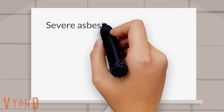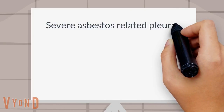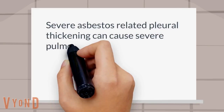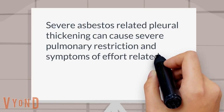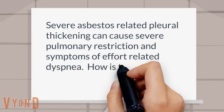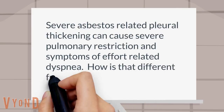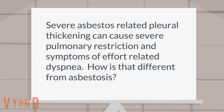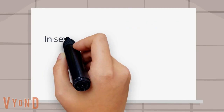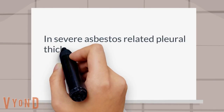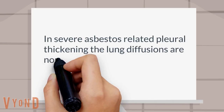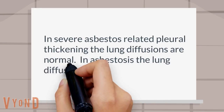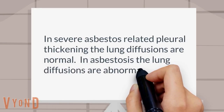Severe asbestos-related pleural thickening can cause severe pulmonary restriction and symptoms of effort-related dyspnea. How is that different from asbestosis? In severe asbestos-related pleural thickening, the lung diffusion capacity is normal. In asbestosis, the lung diffusion capacity is abnormal.